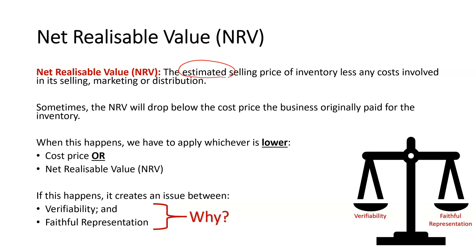Now, sometimes the net realizable value — or NRV — will drop below the cost price that we originally paid for inventory. So when the NRV drops below the cost price, when what we think we can actually sell this item for drops below how much we originally paid for it, we have to apply whichever is lower: the cost price or the NRV.